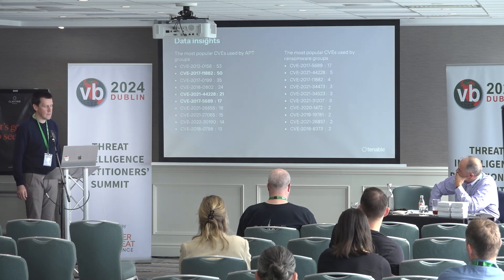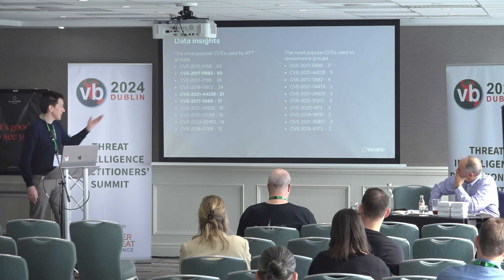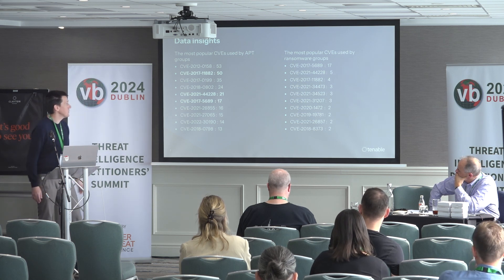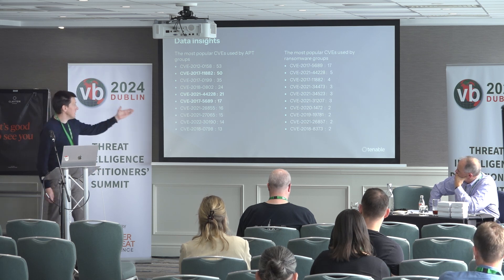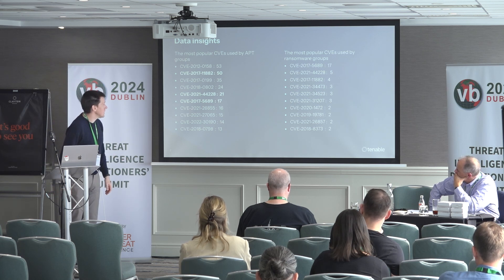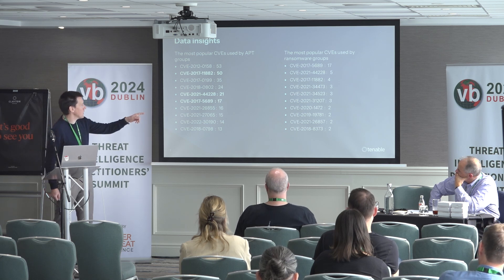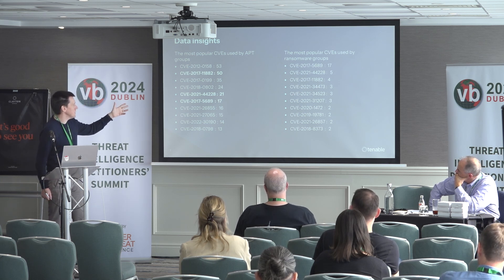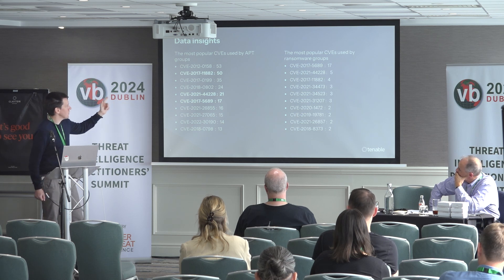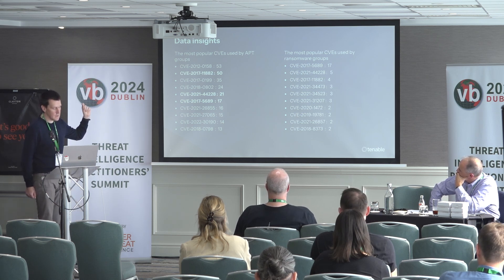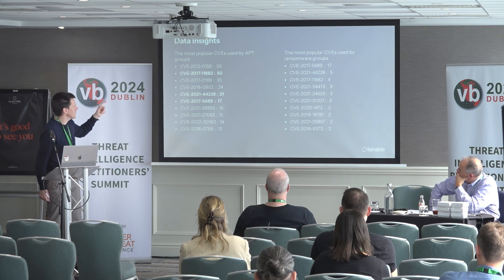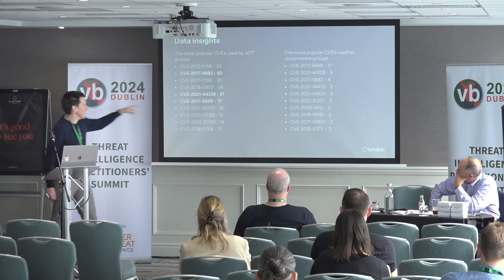To give you some more data insights, these are the CVEs that, during this 14-year timeframe, were most used — in APTs and in ransomware gangs or groups. We can see there are some leaders, and the top three from ransomware were also used in other APT activities. I believe one of them is from Intel's active monitoring technology, another is Log4j, and one is from Office.